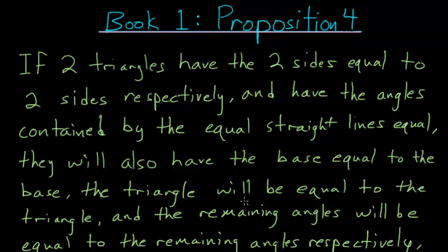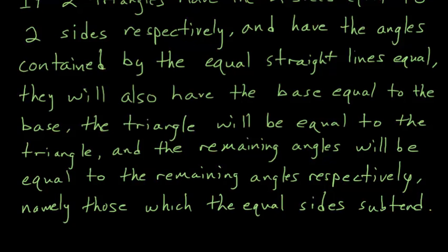The triangle will be equal to the triangle, and the remaining angles will be equal to the remaining angles respectively, namely those which the equal sides subtend.